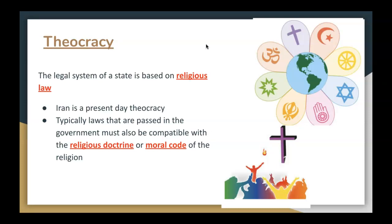There are also theocratic governments. A theocracy is a legal system of a state which is based on religious laws or teachings. For example, Iran is a present-day theocracy. Typically, theocracies have laws that are passed in government, but they must be compatible with the religious doctrines or moral codes of that religion. In Vatican City, where Catholicism is the religion and the Pope resides, Catholicism pretty much dictates the way that country runs. The same could be said of Middle Eastern countries heavily influenced by Islam, which may have those Islamic influences in government today.